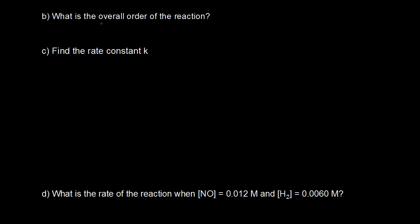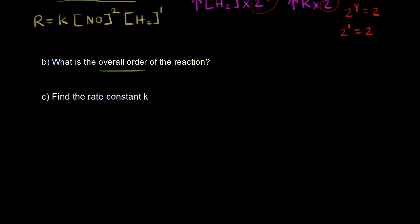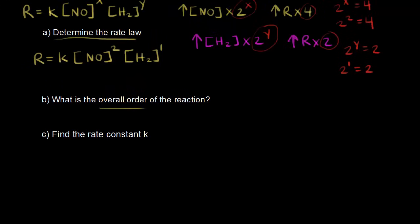In part B, they want us to find the overall order of the reaction. That's easy since we already determined the rate law. The reaction is second order in nitric oxide and first order in hydrogen, so we add the exponents: 2 + 1 = 3. The overall order of the reaction is three.